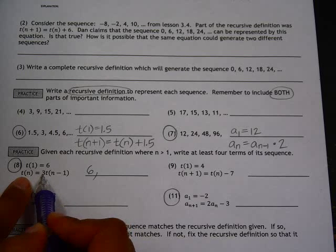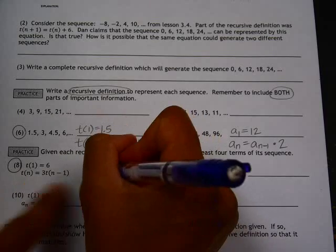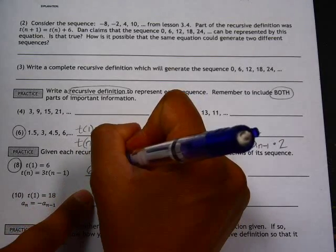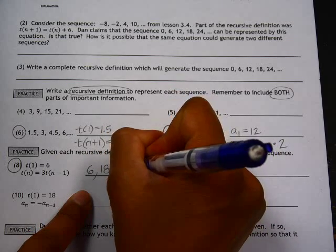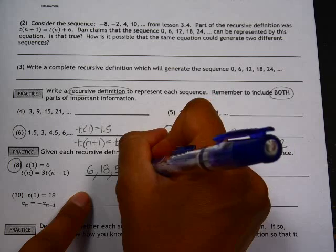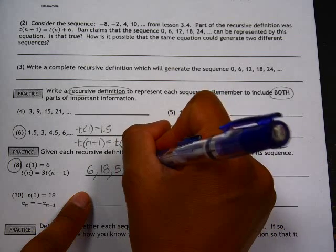So to get the next term, you're going to do 3 multiplied by the previous term. So take this term and multiply by 3, that gives you 18. Multiply it by 3 again and you get 54. And multiply by 3 again, we get 162.